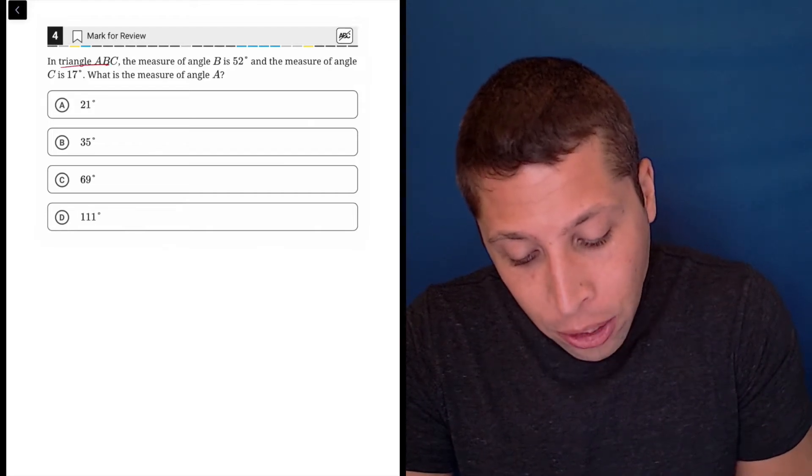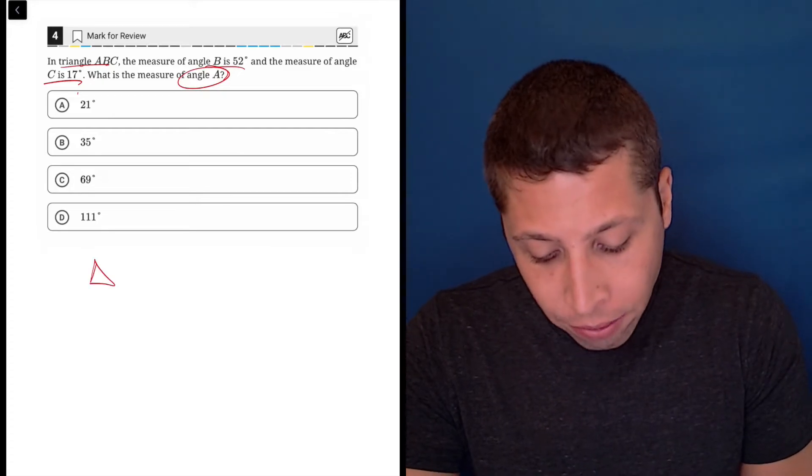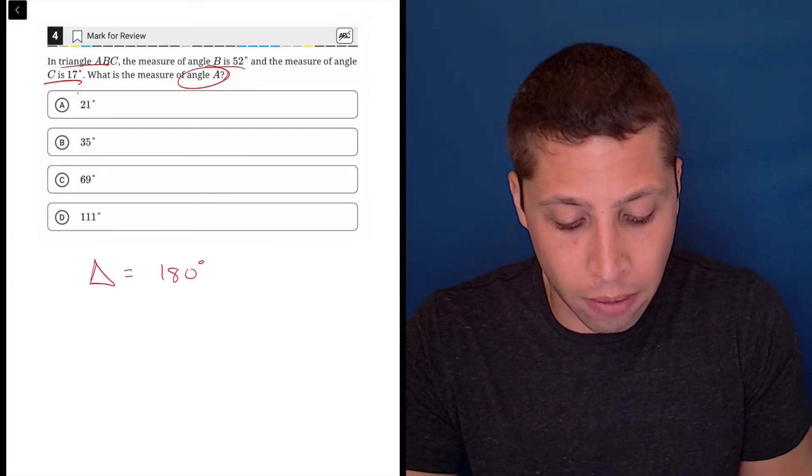We have a triangle, and we know two of the angles, and we're trying to find the third. Well, we should know that every triangle has a total of 180 degrees.